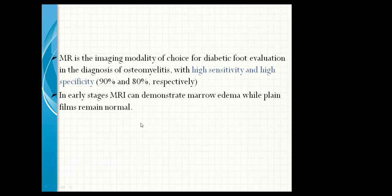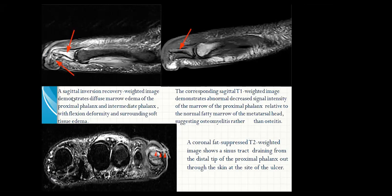In early stage, MRI can demonstrate marrow edema while a plain film remains normal. A sagittal inversion recovery-weighted image demonstrates diffuse marrow edema of the proximal phalanx and intermediate phalanx with a flexion deformity and surrounding soft tissue edema. The corresponding T1-weighted image demonstrates abnormal decreased signal intensity of the marrow of the proximal phalanx relative to the normal fatty marrow of the metatarsal head, suggesting osteomyelitis rather than reactive changes.